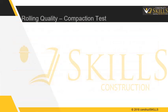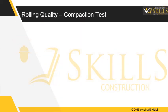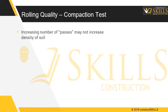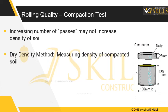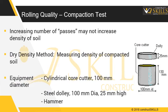Rolling quality: increasing the number of passes may not increase the density of soil. The soil should be compacted to a minimum of 95%. The density of the compaction can be measured using the dry density method test or by sand replacement test.